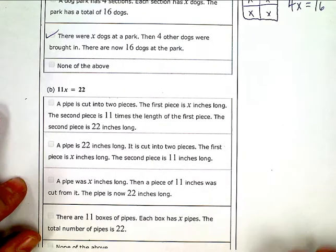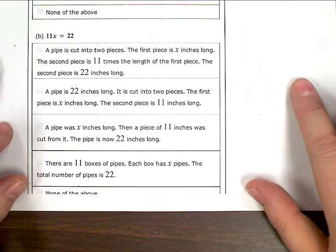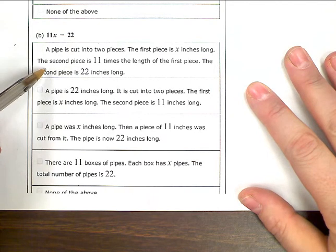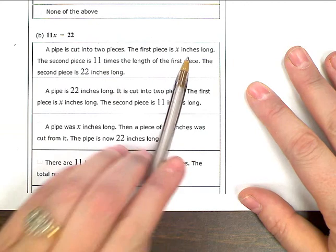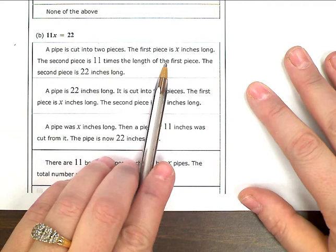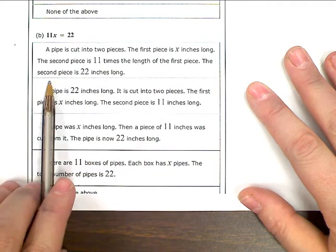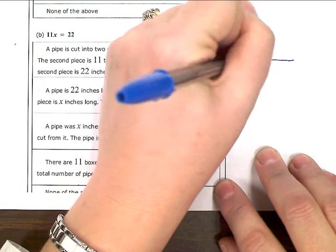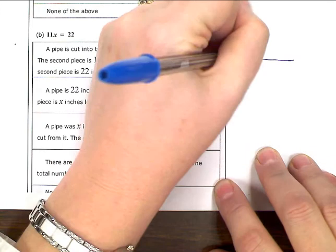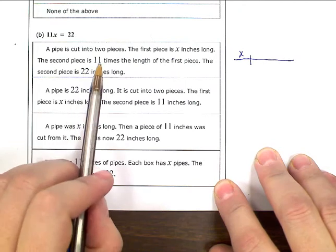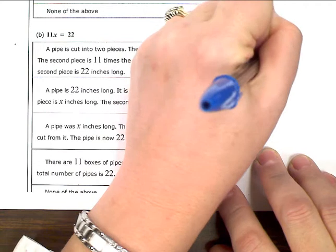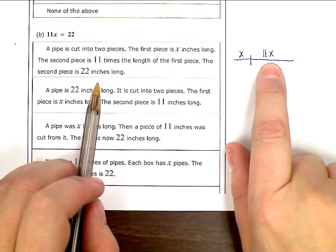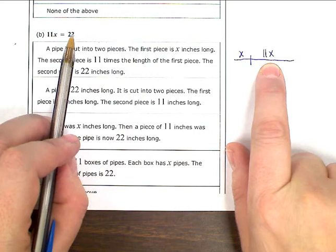Now, moving down, I have a second equation here. 11x equals 22. My first context or story is a pipe is cut into two pieces. The first piece is x inches long. The second piece is 11 times the length of the first piece. The second piece is 22 inches long. So if you think of this scenario, let's pretend this is my pipe. It's cut into two pieces. The first piece is x inches long. The second piece is 11 times the first one, or 11 times x. The second piece is 22 inches long. So the second piece, the 11x, equals 22. This one works.